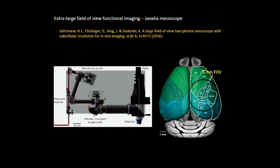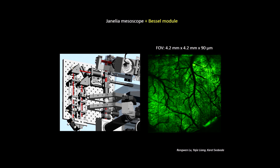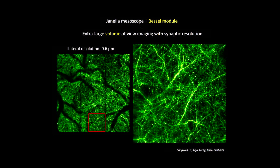One particularly interesting microscope is a mesoscope designed and built by Carol Sported at Janelia Farm. This microscope has a very large field of view — about 5mm — covering approximately 50% of half the cortical hemisphere. It also has a remote focusing unit that allows very rapid movement of the focus in the Z direction. By combining the Bessel module with the mesoscope, we can now probe a very large volume of neurons at very high resolution — zooming in, you can still see dendritic spines across this large field of view.